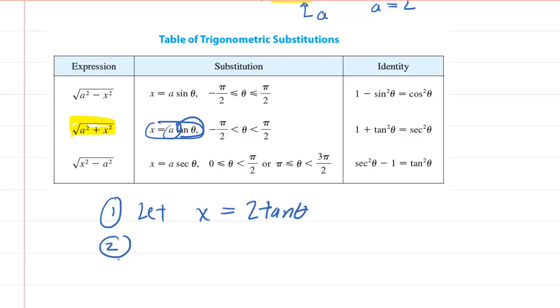The next thing you do is you differentiate that with respect to theta. So you would have dx equals, now we have to remember what the derivative of tangent theta is. And the derivative of tangent of theta is secant squared of theta. And then you'll have a d theta right there.